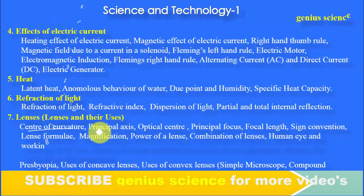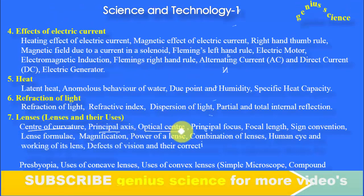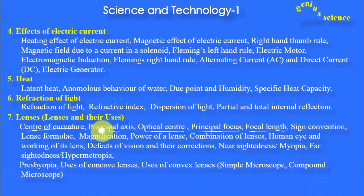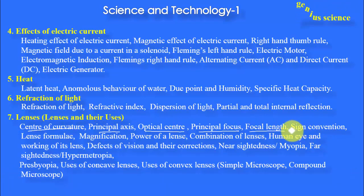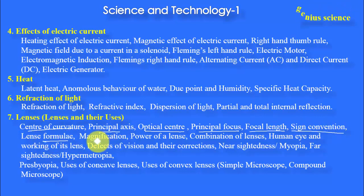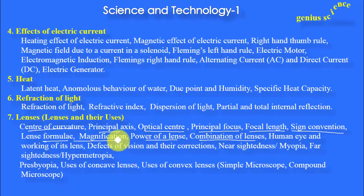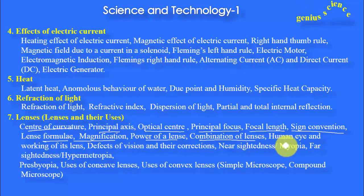For lenses: center of curvature, principal axis, optical center, principal focus, focal length — these definitions are important. Then sign conventions, lens formula, magnification, power of lens, and combination of lenses. These are the important terminology and terms from the lenses chapter.